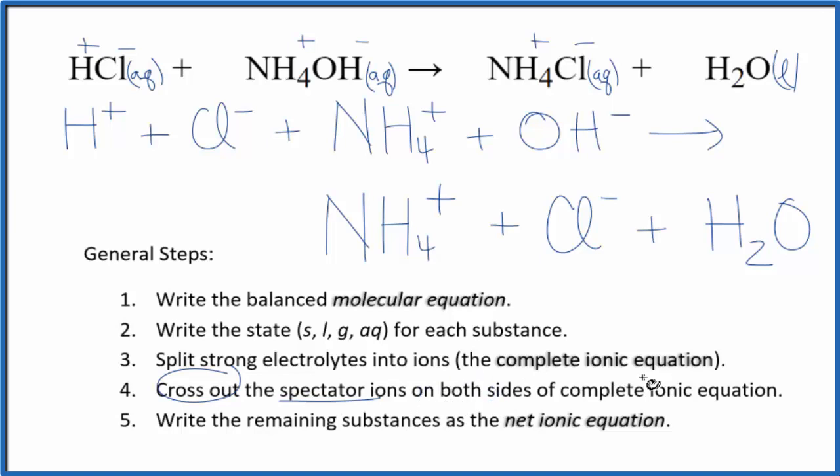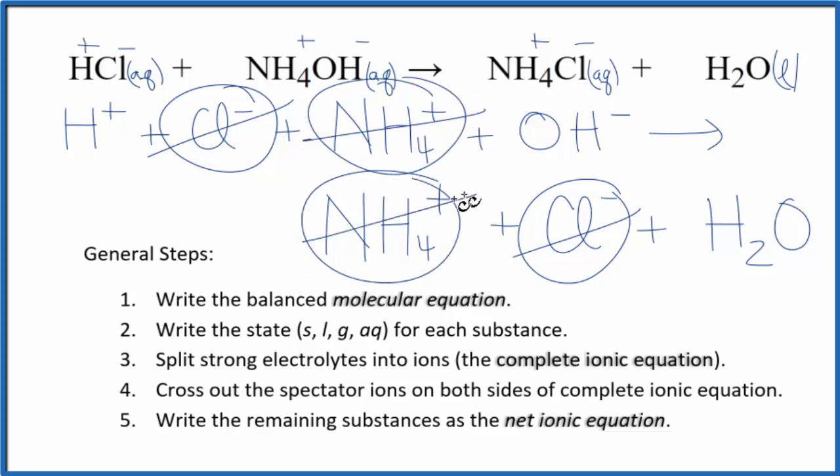So I'm looking for things that are the same in the reactants and the products. I can see I have a chloride ion here and then in the products I have a chloride ion, just cross it out. I have the ammonium ion in the reactants and in the products, cross it out. But what remains is the net ionic equation for HCl plus NH4OH.